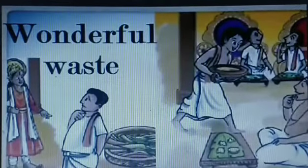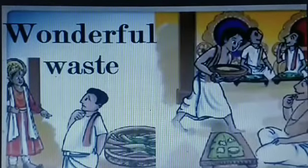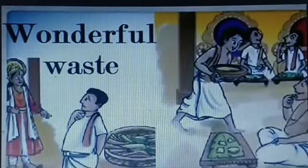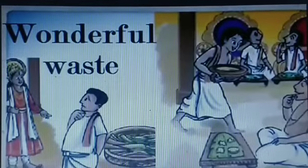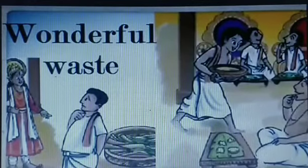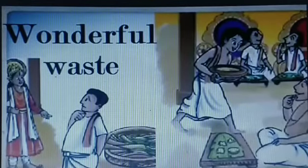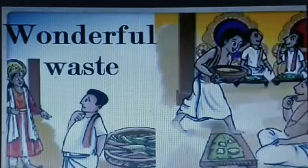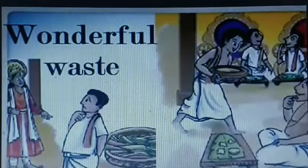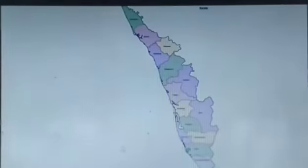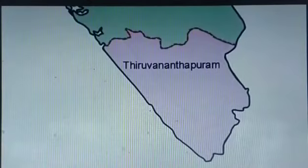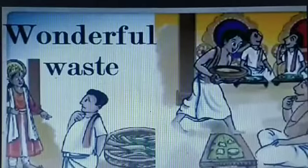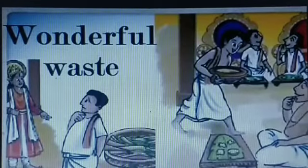Folktales usually begin with the phrase 'a long time ago' or 'once upon a time'. One more element of folktales is that they have a theme, a setting of the story, main characters, and there is a problem as well as a solution with a life lesson. This story is a folktale from Chavankore in Kerala. Chavankore is now known as Thiruvananthapuram. It is also the capital of Kerala. Wonderful Waste is the story that tells us about the origin of the famous dish from Kerala known as Avial.